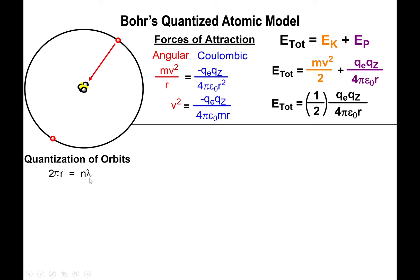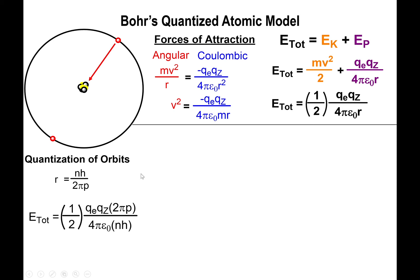We substitute the de Broglie wavelength — λ = h/p (Planck's constant over momentum) — into the circumference condition. Solving for r gives r = nh / (2π · momentum). We now have an expression for the radius, which is part of the total energy equation. Substituting r back, we get 2π·momentum / (nh), and the factors of 2 and π cancel.